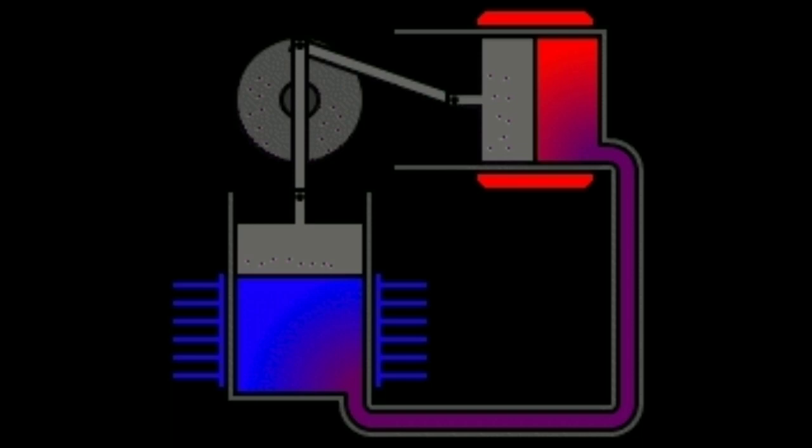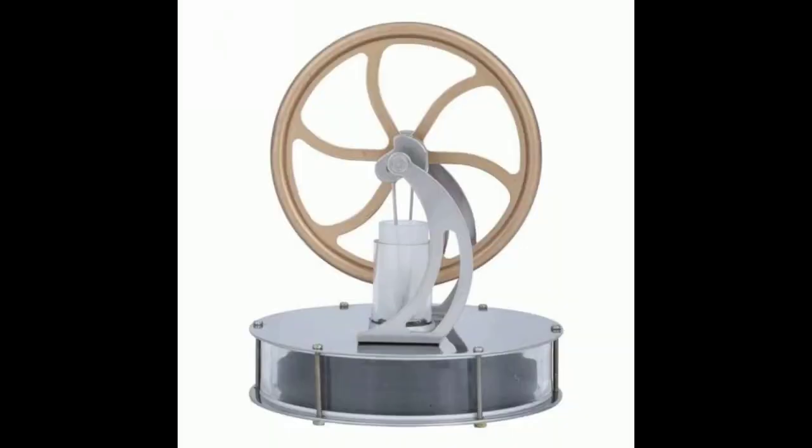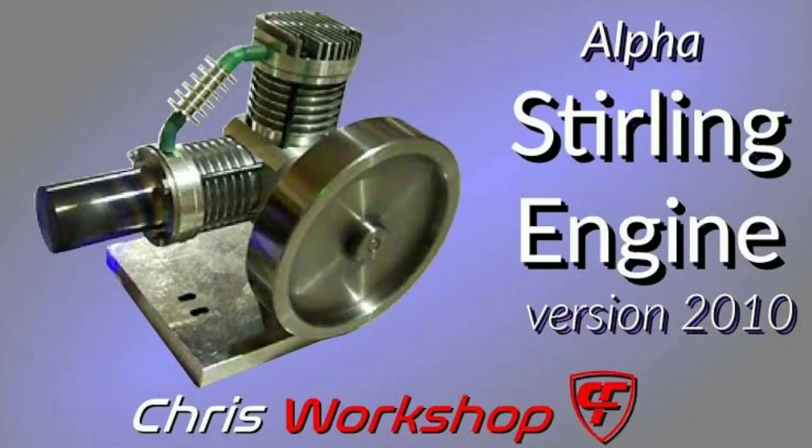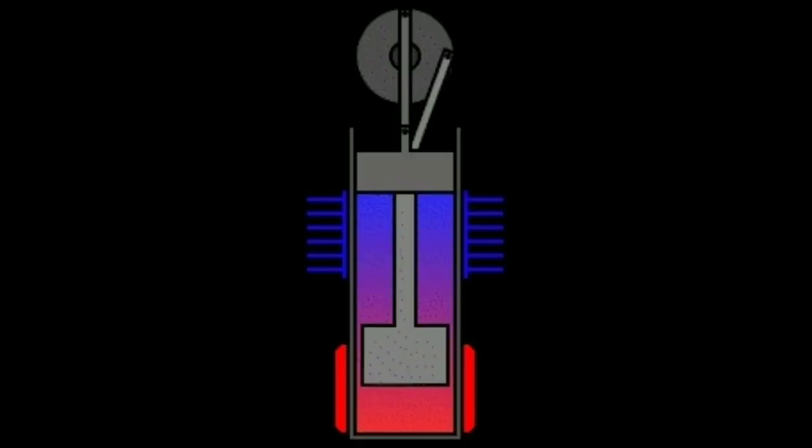There are three main variations: alpha, beta, and gamma types. The heater base panel expands the gas to push the piston. When the gas cools, the motion continues. These three engine types have different processes.